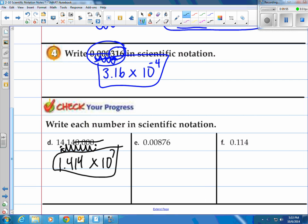Take a look at E. 0.00876. Move the decimal over to the right of the first non-zero number. That's 8, between 8 and 7. So you got 8.76 and then times 10 to the what? Well, how many spaces did you move it? One, two, three. This is a number that's less than 1, so I know it's gonna be a negative exponent. There's the answer.